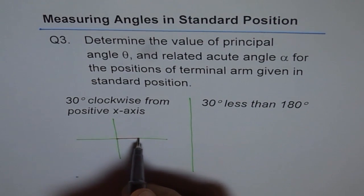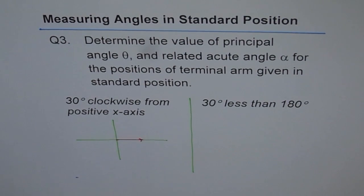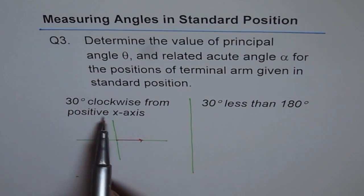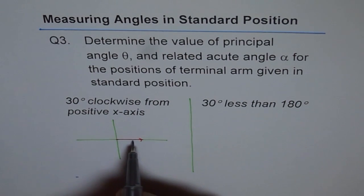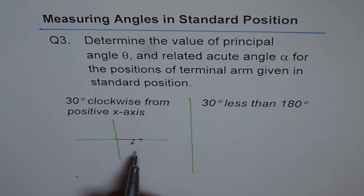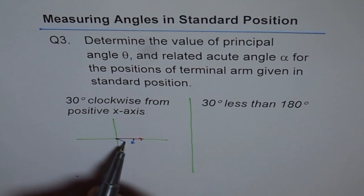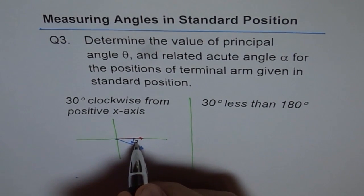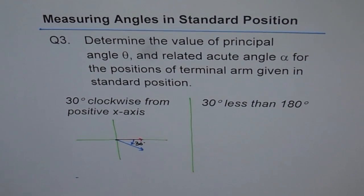So standard position means initial arm along the x-axis from origin. Now it says 30 degrees clockwise from positive x-axis. So let's make 30 degrees clockwise in this direction. Clockwise in this direction. So let's say there is 30 degrees. So that's my angle. So it is clockwise 30 degrees. Let me write 30 degrees here. So that becomes accurate.